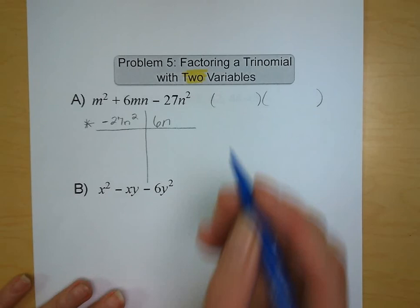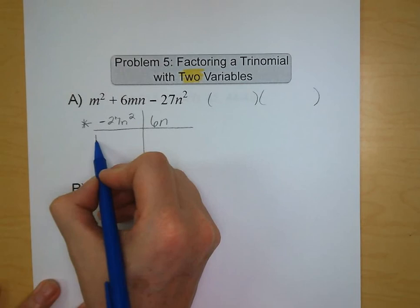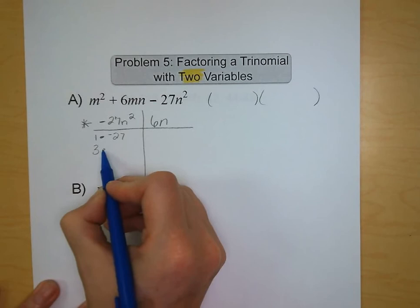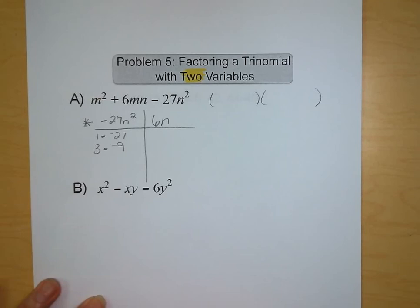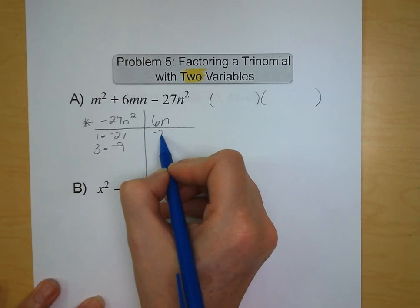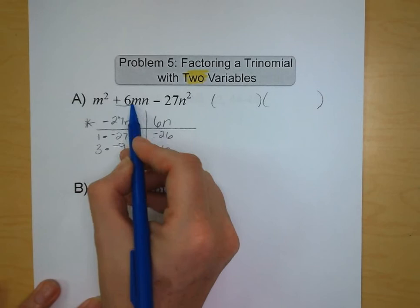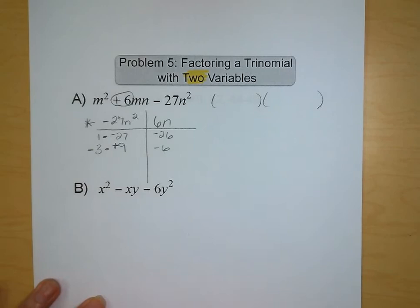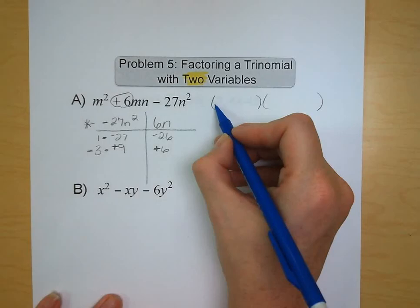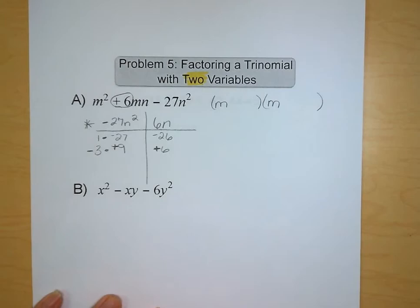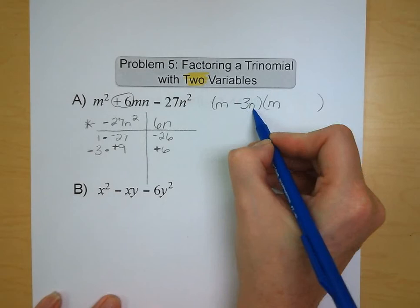My products of -27, we've got 1 and -27, and we've got -3 and 9, or 3 and -9. Now let's add up our sums. -27 plus 1 is -26. -9 plus 3 is -6. But we want a positive 6, so we're going to add in a factor of -3 and a positive 9. Just flip those signs, and now we have a positive 6. So, our first term is going to be an m, and then we are going to subtract 3n in one term and add 9n in the second term.